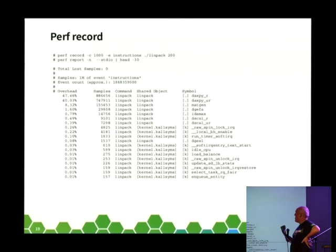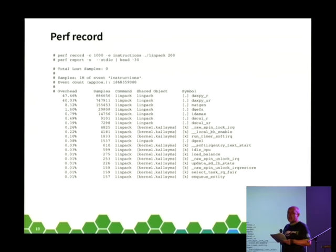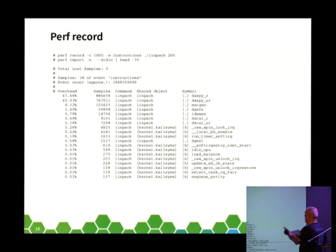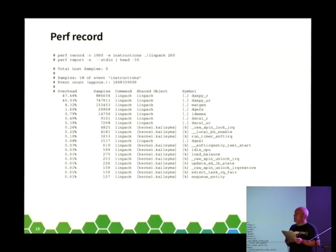In the previous example I limited sampling to user space only with instructions:u. Now I've dropped that restriction and sampled in both user and kernel space while limiting to the CPU Linpack is running on. DAXBR is still the hot code — the dot in brackets means it's a user space sample. Now we also see kernel samples: bottom-half processing, soft IRQ, IRQ, and idle CPU. Notably we have no syscalls, which is not surprising since Linpack is a floating-point benchmark.